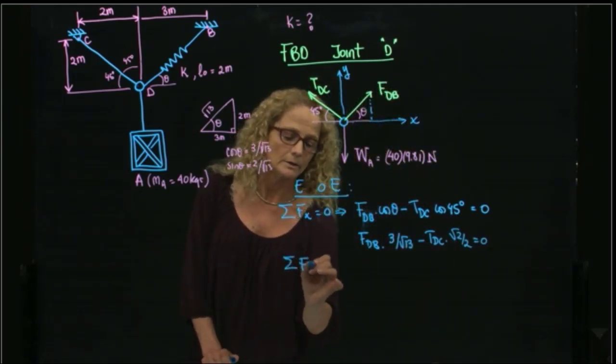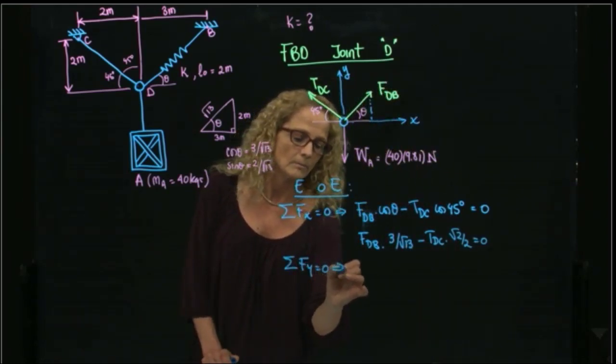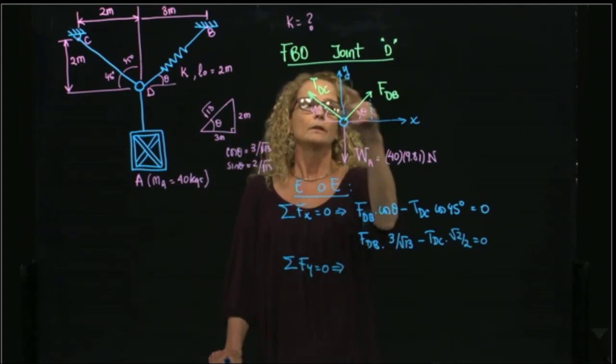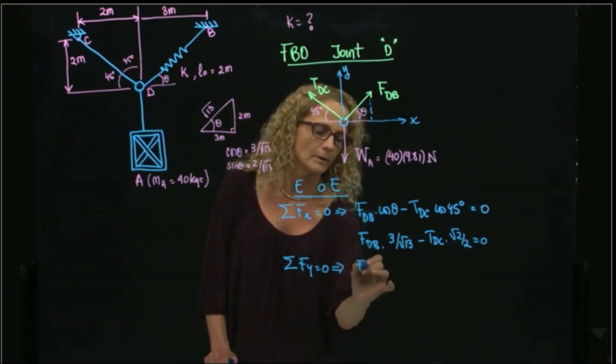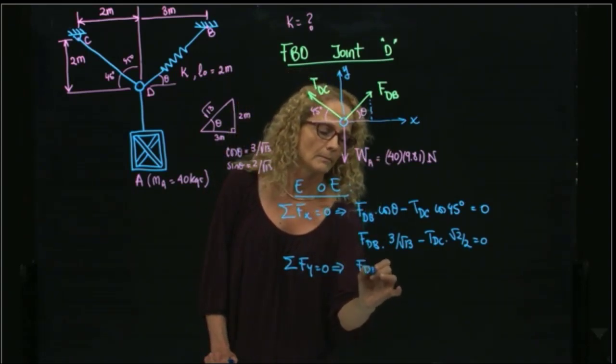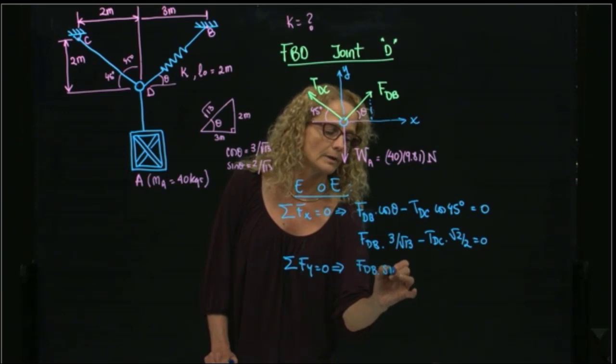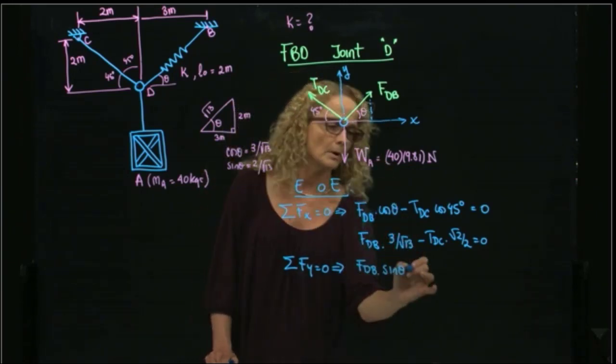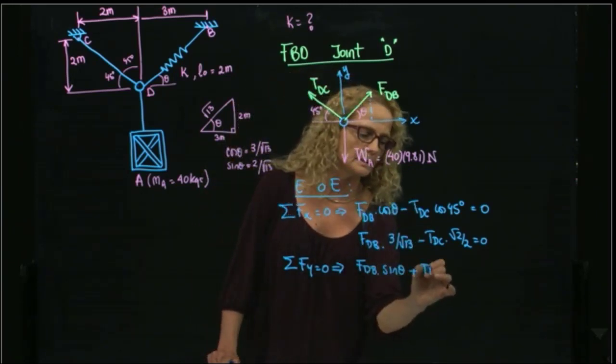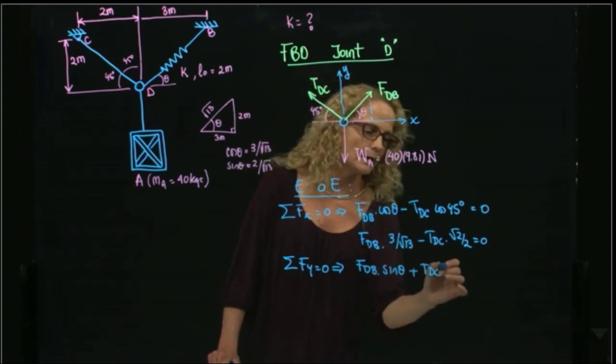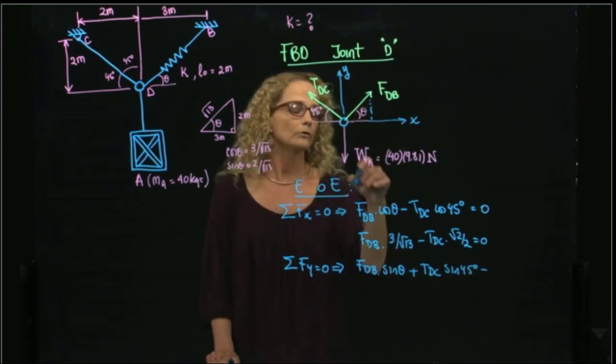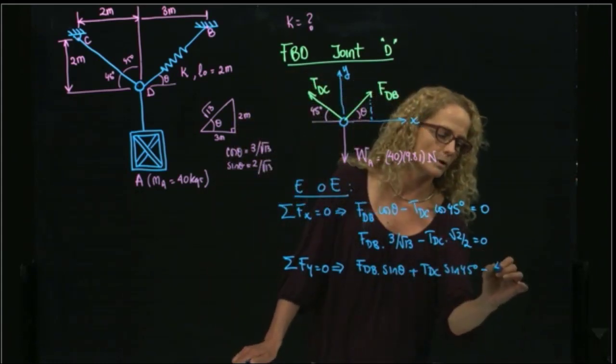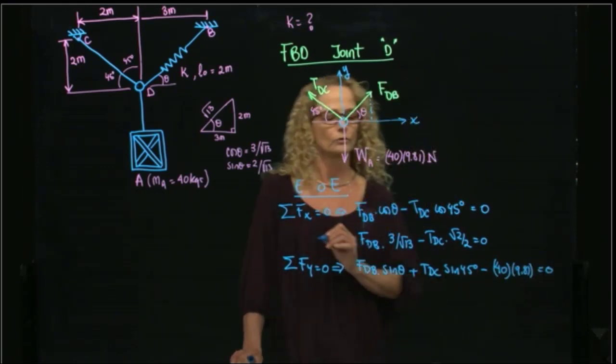So this is my first equation, and the second equation is sum of forces in y equals to 0. These two forces contribute in the y direction, so this will be fdb sine of the angle plus tdc sine of 45 minus the weight. And the weight is 40 times 9.81, and that's equals to 0.